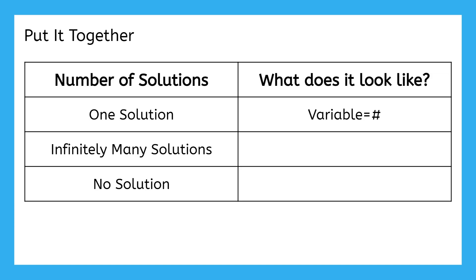In both of these two new scenarios, all of the variables will always cancel each other out. If an equation has infinitely many solutions, then you will be left with a true statement, like negative 3 equals negative 3. If an equation has no solution, then you'll be left with an untrue statement, like 5 equals 1.